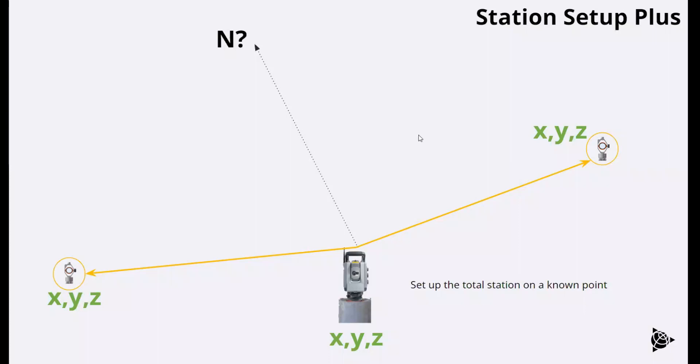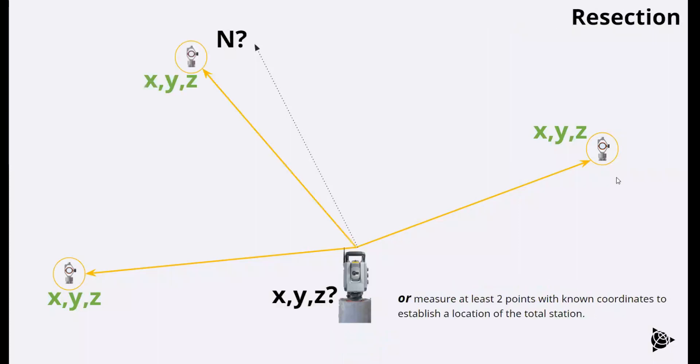Oftentimes, we don't have the total station location available. What we do is what's called a resection. So the resection is where the total station location is unknown. And so we do need at least two back sites or two known positions to calculate the position of the total station.